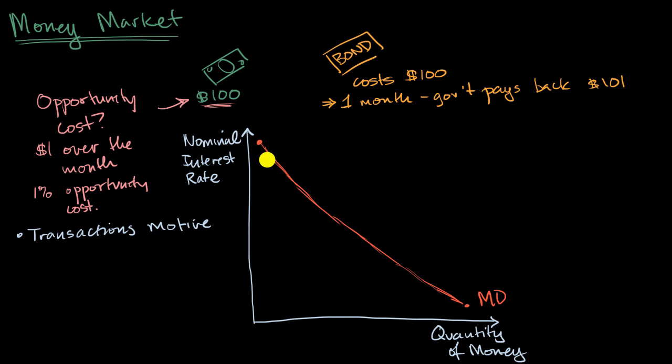If you have it lent to the government, and then all of a sudden you see your dream iguana, then you have to wait a month in order to do it. So that would be your transactions motive, the motivation to hold money. But once again, the reason why we have this downward sloping curve, if nominal interest rates are really high, if the government is willing to pay you a lot back in a month, then you might say, you know what, I'm willing to take the risk. Even if I see that dream iguana, if I lend the money to the government now, in a month, I might be able to buy two iguanas, even if they aren't quite my dream iguana.